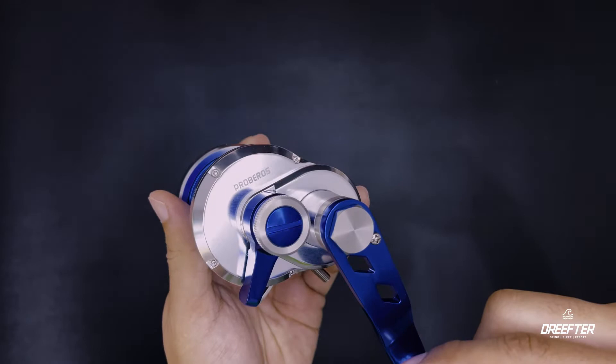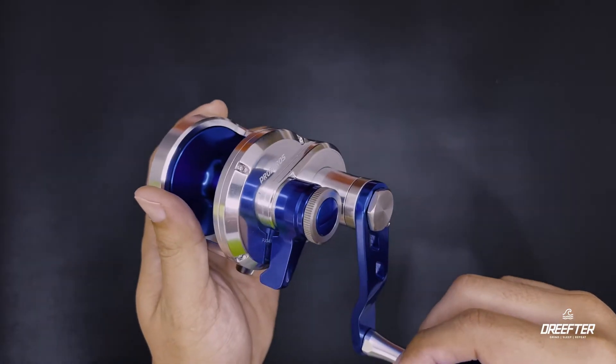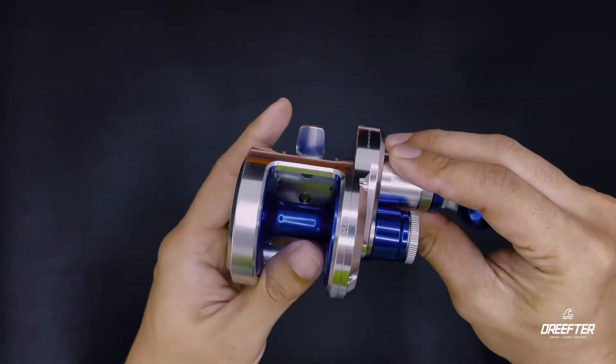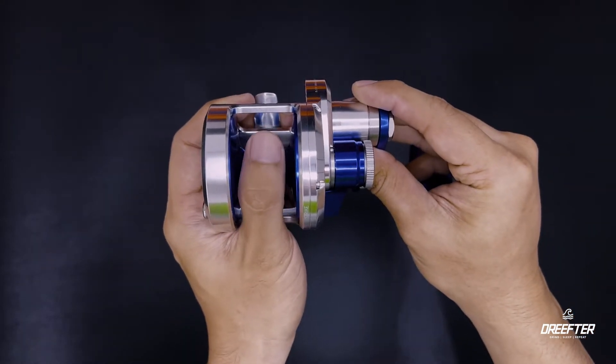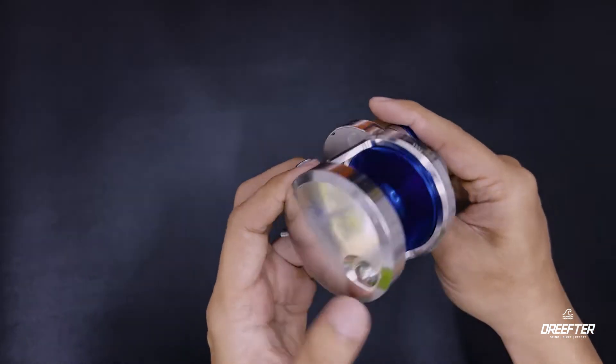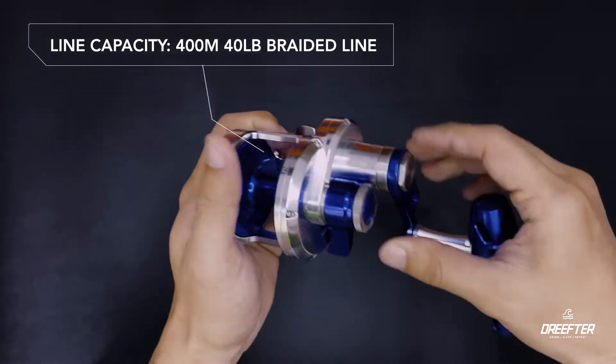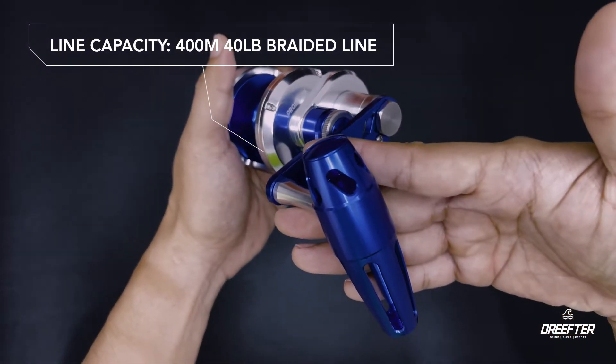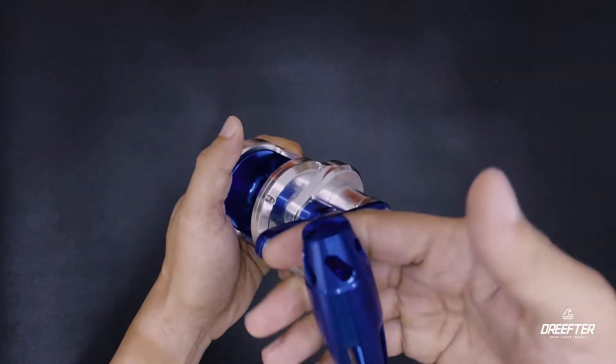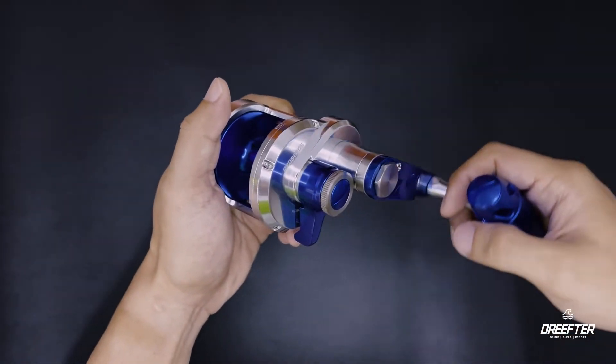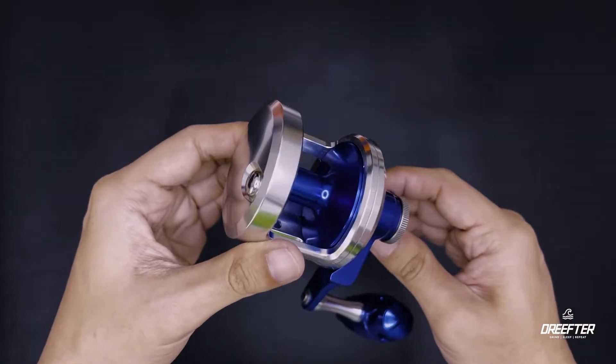At sa usapang braid line naman, so based on its specs you can spool for at least 400 meters of 40 pound braided line. So sulit na sulit na ito guys, especially if yung mga spot mo is around 100 to 200 meters.